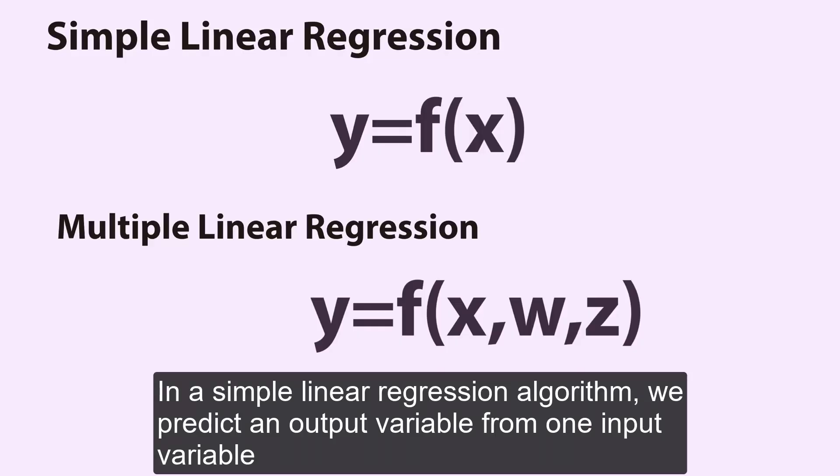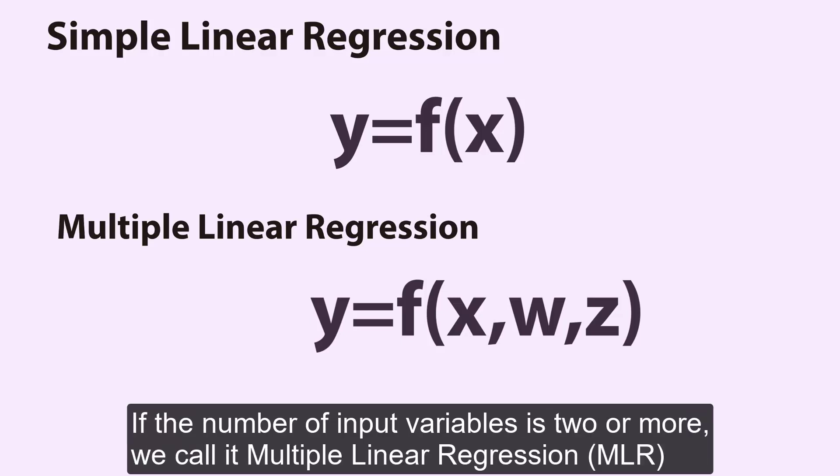In a simple linear regression algorithm, we predict an output variable from one input variable. If the number of input variables is two or more, we call it multiple linear regression (MLR).